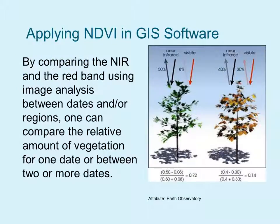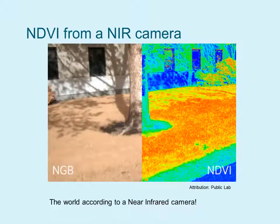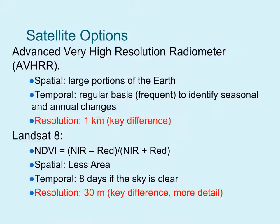We can apply NDVI in GIS software. By comparing the near infrared and the red band using image analysis between certain dates, we can compare the amount of healthy and/or stressed vegetation. On the right you can see the world according to near infrared — so we're using remote sensing.